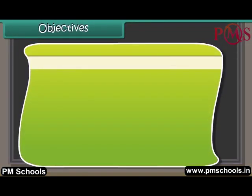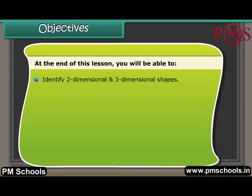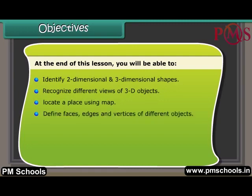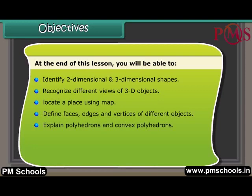Objectives: at the end of this lesson, you will be able to identify two-dimensional and three-dimensional shapes, recognize different views of 3D objects, locate a place using a map, define faces, edges, and vertices of different objects, explain polyhedron and convex polyhedrons, describe prisms, discuss pyramids, and apply Euler's formula.